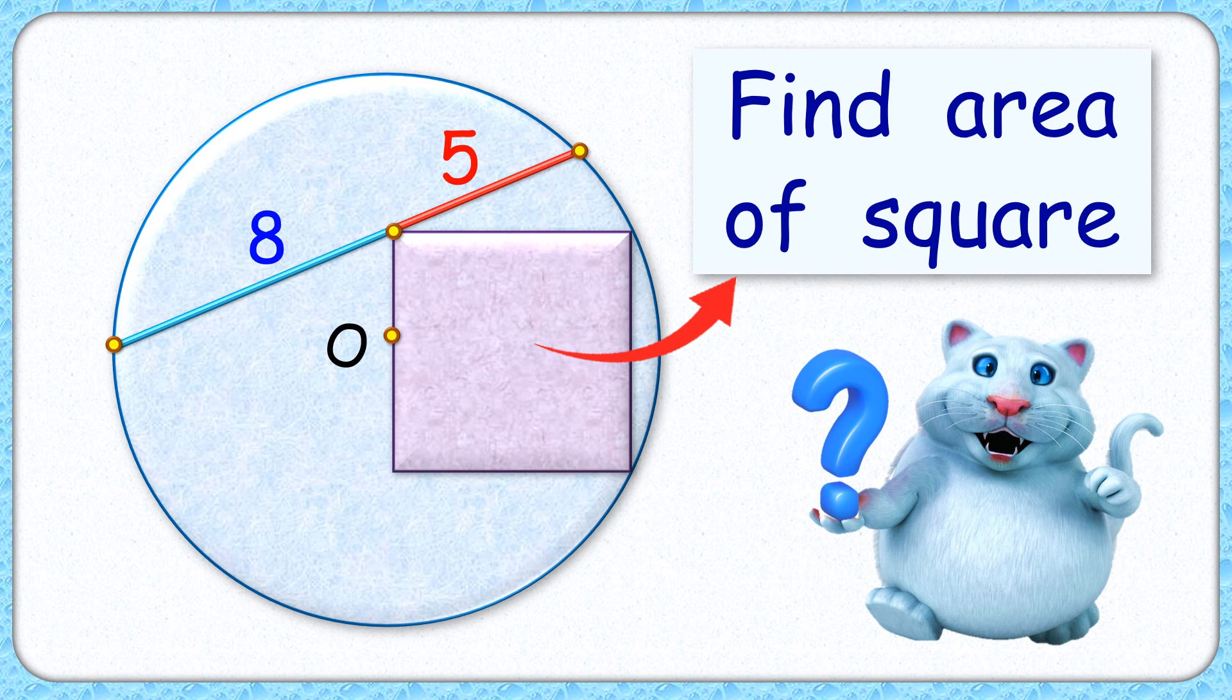A chord is drawn passing through the vertex of the square such that the vertex divides the chord into 8 centimeter and 5 centimeter lengths. The exciting part is with this limited data we have to find the area of the square.